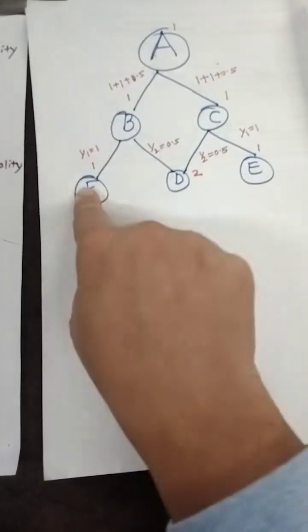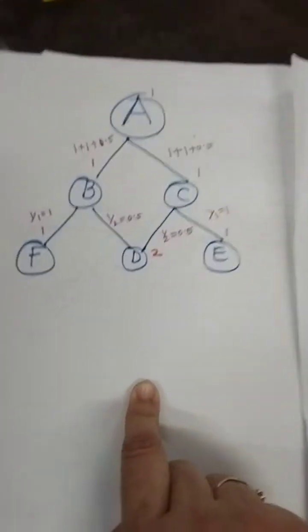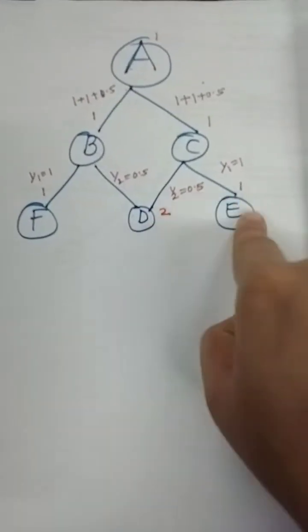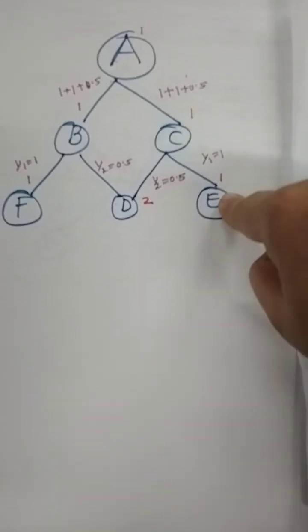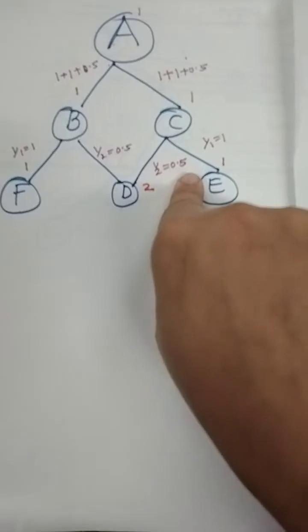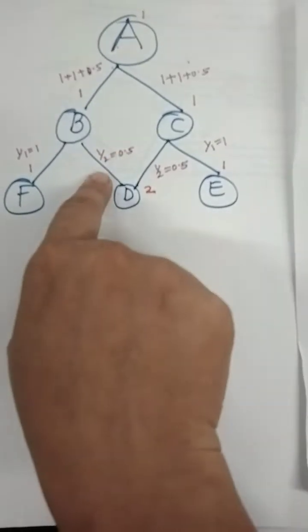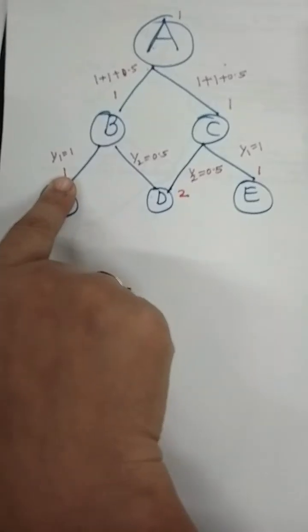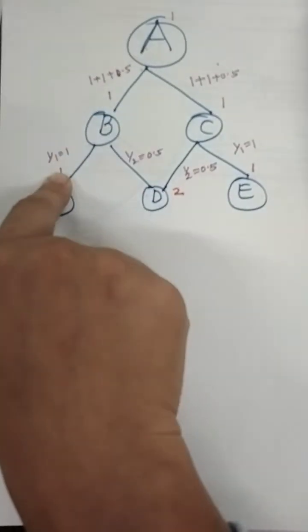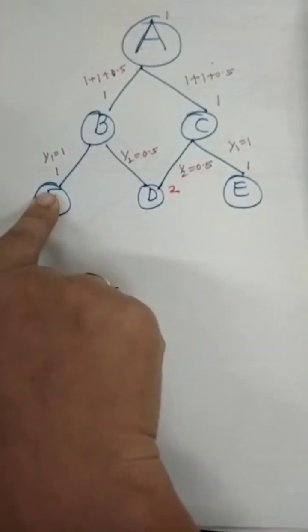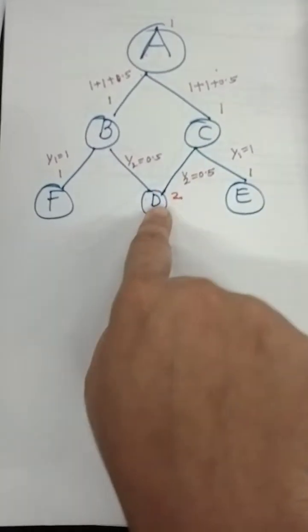Now you have to find the edge weights. For leaf nodes — nodes occurring at the last level — the edge weight is: upper node value divided by lower node value. So for leaf node F: one divided by one equals one. For leaf node D coming from B: one divided by two equals 0.5. Similarly from C to D: one divided by two equals 0.5. For leaf node E: one divided by one equals one.